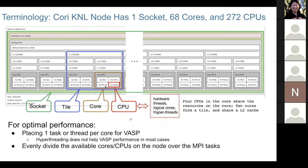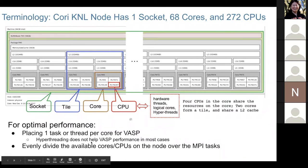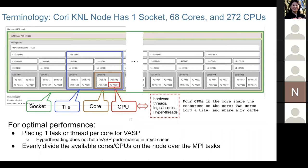If you place more than one task or thread on each core, that is called hyper-threading. But for VASP, hyper-threading doesn't help much, so in most cases we don't recommend users to use hyper-threading.